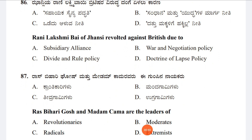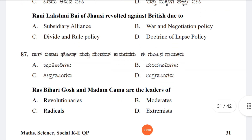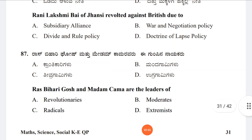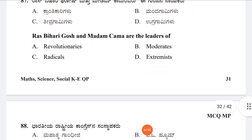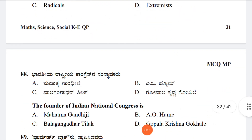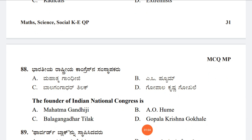Question 87: Raj Bihari Ghosh and Madam Cama are leaders of which group? Option A: Revolutionaries, Option B: Moderates, Option C: Radicals, Option D: Extremists. The answer is Option A, Revolutionaries.